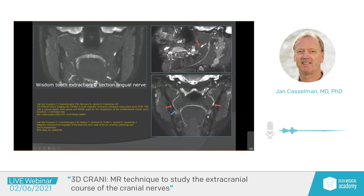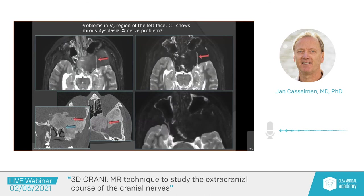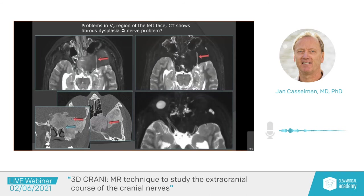In the coronal plane, this is the normal lingual nerve on the right side. This is the sectioned lingual nerve on the left side with the stump and dead ends — thickened and hyperintense signal. You can also see that in the sagittal plane with the inferior alveolar nerve going into the mandible.